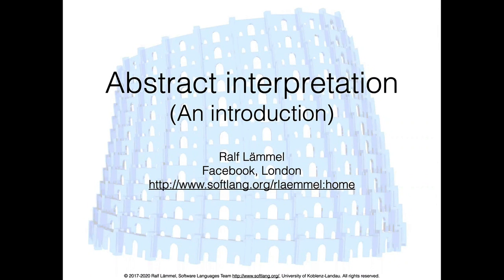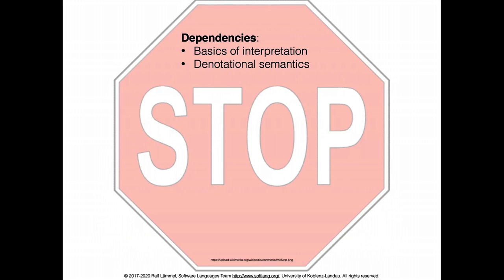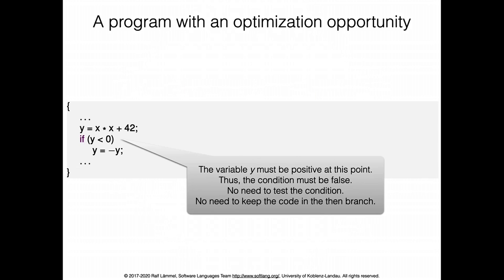We have talked much already about interpretation, like running a program, and we have also exercised the notational style of semantics to get interpreters, or the operational style. Here we want to add a form of interpretation usually referred to as abstract interpretation, that allows you to compute properties of the program rather than actually execute or evaluate it. I assume you have had coverage of basics of interpretation and denotational semantics, as we rely on these subjects in what follows.